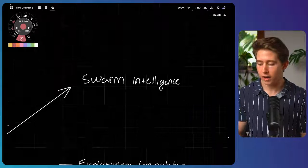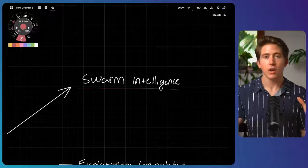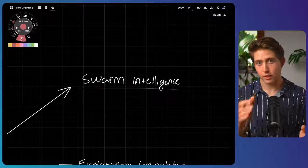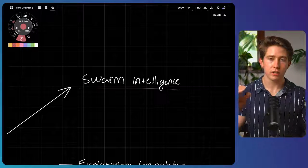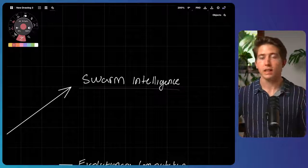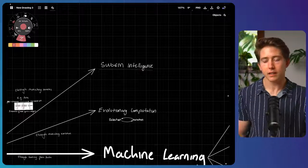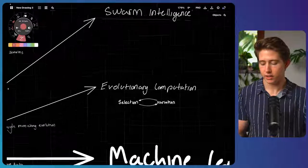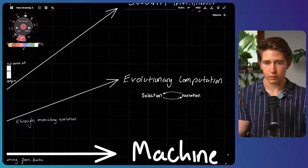And so the sum of the interaction has become intelligent. And this is what we call swarm intelligence. And this is the first kind of AI where we mimic this with machines. We get very simple machines that follow a very simple set of rules. And then the culmination of how they interact can result in intelligent behavior.